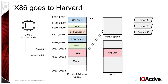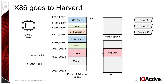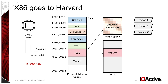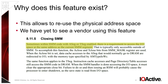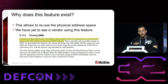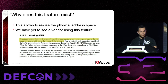X86 behaves like a Harvard architecture in this case. If core zero is running in normal mode, both data and instruction fetches go to MMIO. If core zero is in SMM with T-close off, we read and execute from SMRAM — no problem. However, when T-close is on, data fetches go to MMIO, and this is a problem because this portion can be controlled by an attacker. Triggering the condition is super easy: we just set this T-close bit and call into an SMI, and the system will immediately freeze or hang. This feature exists because AMD wanted to have the ability to reuse the physical address space and have SMM code access an IO device using the same SMRAM physical memory. We haven't seen any vendor using this feature. What we could track is that in 2006, there was a document that first mentioned the feature, so it's been around for at least 18 years.